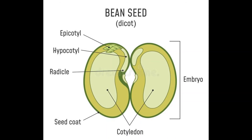On the outside of the seed, there is a coating called the testa. Many seeds also have a hole on the side called the hypocotyl. A monocot has a single cotyledon, such as a corn kernel, and a dicot has two, such as a lima bean.